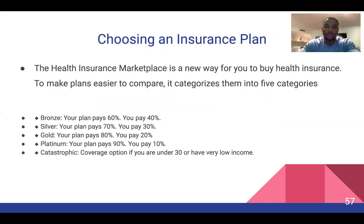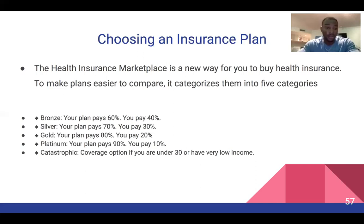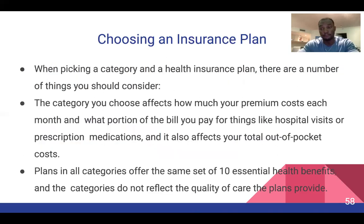The health insurance marketplace is a new way to buy health insurance and makes plans easier to compare by categorizing them into five categories: Bronze, Silver, Gold, Platinum, and Catastrophic. Each differs in the percentage that your plan pays versus the percentage that you pay. The Catastrophic option influences your coverage if you are under 30 or have a very low income. The category you choose affects your monthly premium cost and what portion of the bill you pay for things like hospital visits or prescription medications. It also affects your total out-of-pocket costs. Plans in all categories offer the same set of 10 essential health benefits, and categories do not reflect the quality of care the plans provide.